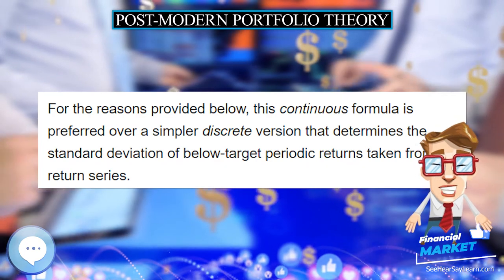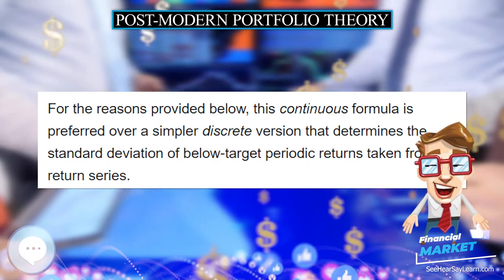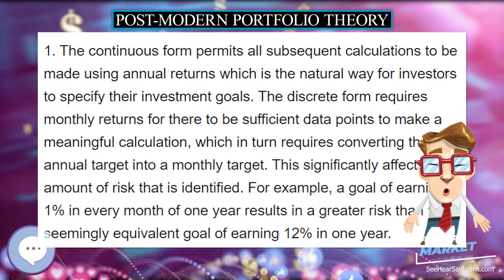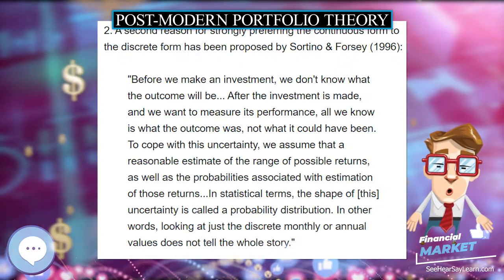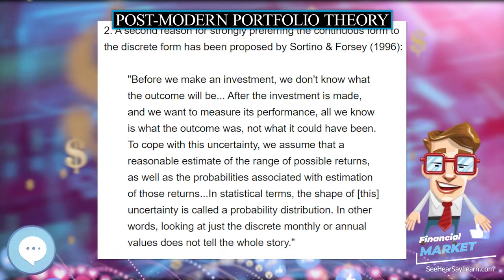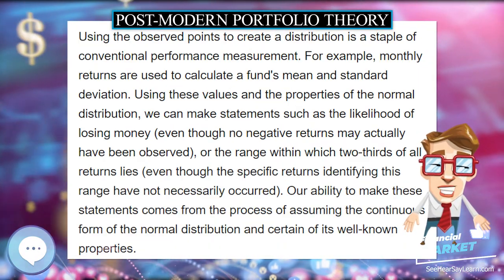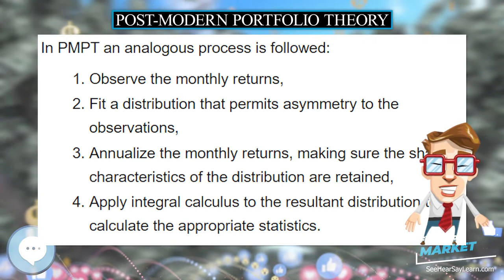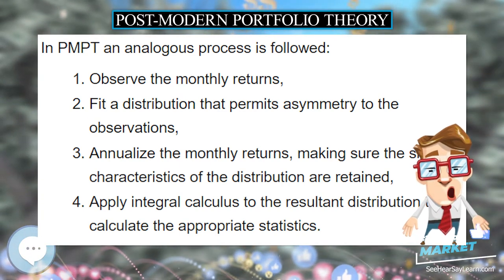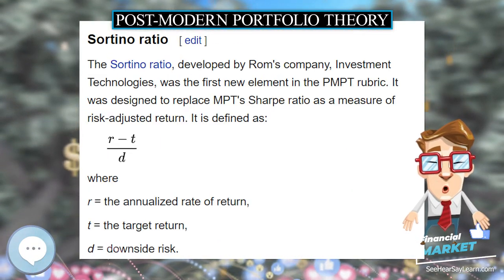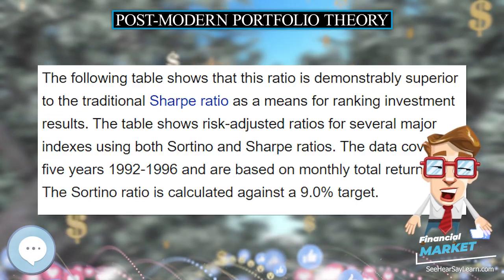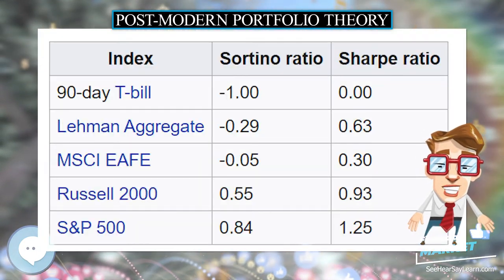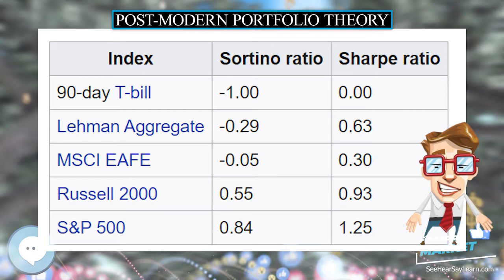The converse distortion applies to distributions with a predominance of downside returns. The result is that using traditional MPT techniques for measuring investment portfolio construction and evaluation frequently does not accurately model investment reality. It has long been recognized that investors typically do not view as risky those returns above the minimum they must earn in order to achieve their investment objectives. They believe that risk has to do with the bad outcomes, i.e., returns below a required target, not the good outcomes, i.e., returns in excess of the target, and that losses weigh more heavily than gains.